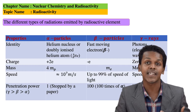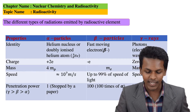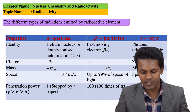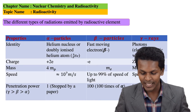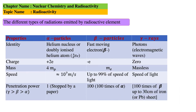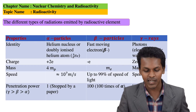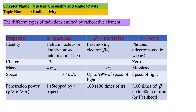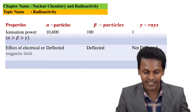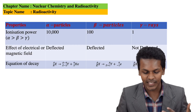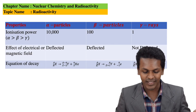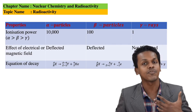The speed of alpha particles is 10 raised to 7 meters per second. Beta particles travel at up to 99% of the speed of light, and gamma rays travel at the speed of light. Regarding penetration power, it has been found that gamma radiation has the most penetrative power, followed by beta and then alpha.